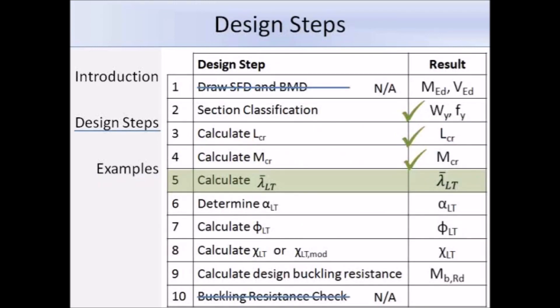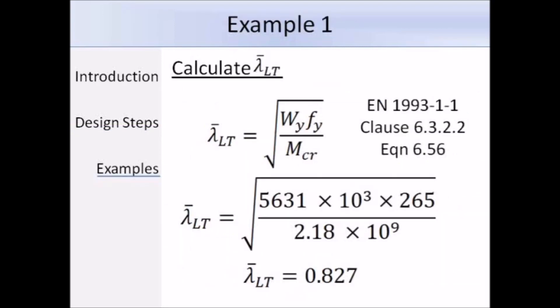So to work out lambda bar LT, we use equation 6.56, so we have the values of Wy and fy from the section classification, and we just worked out MCR, so we can substitute in the values, and lambda bar LT works out as 0.827.